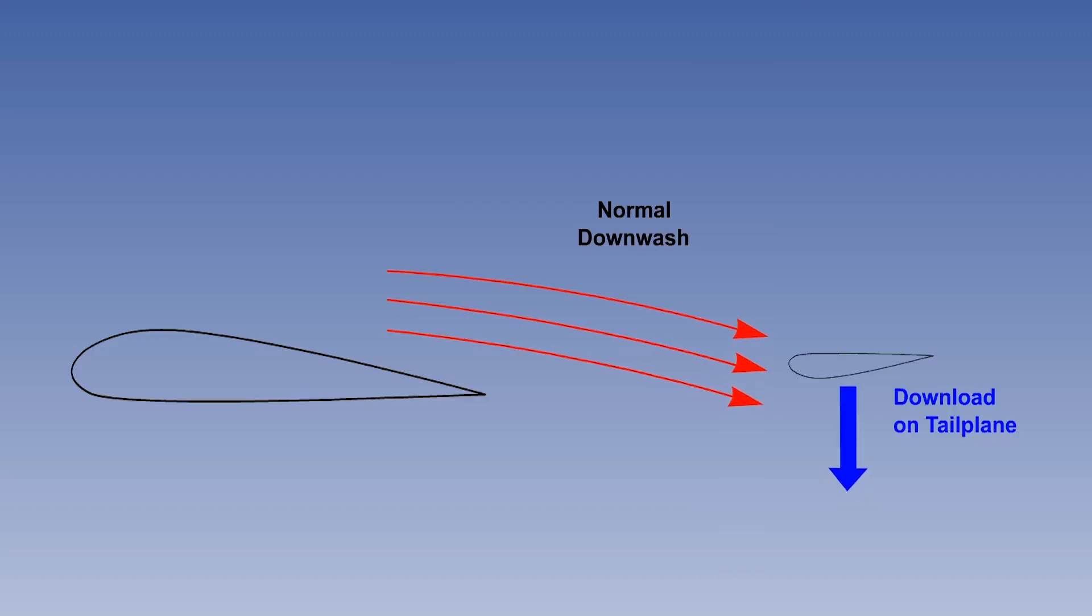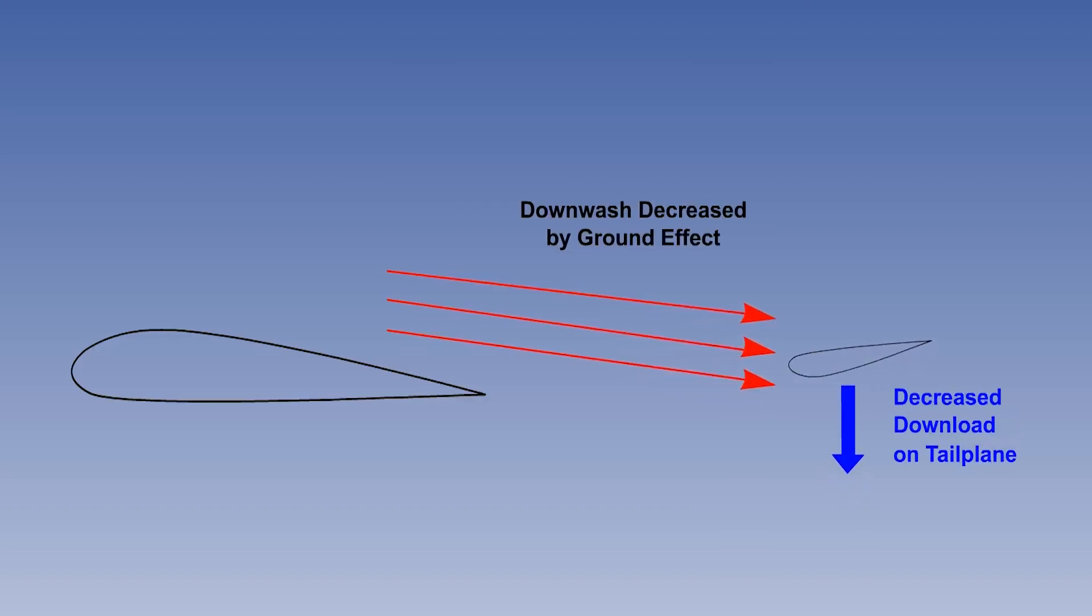The pilot may need to move the control column aft in order to restore sufficient downforce to achieve the desired landing attitude. The loss of downforce is due to the decreased downwash over the tailplane, and the associated change in the effective angle of attack.